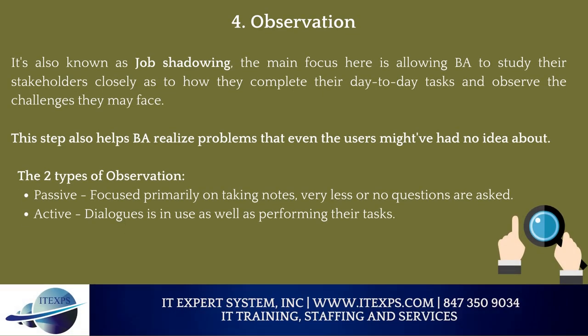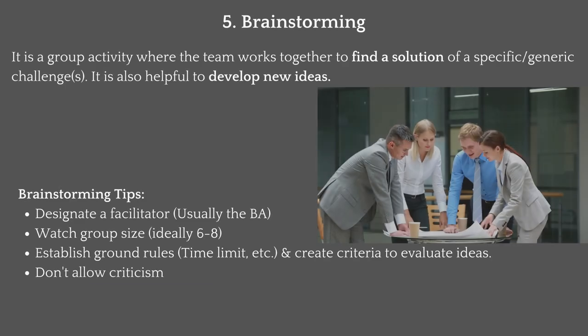Number 4: Observation, also known as job shadowing. The main focus here is allowing the BA to study their stakeholders closely — how they complete their day-to-day tasks and observe the challenges they may face. This step also helps the BA realize problems that even the users might not have been aware of. The two types of observations are passive, focused primarily on taking notes with very few or no questions asked, and active, meaning dialogues are used while also performing tasks.